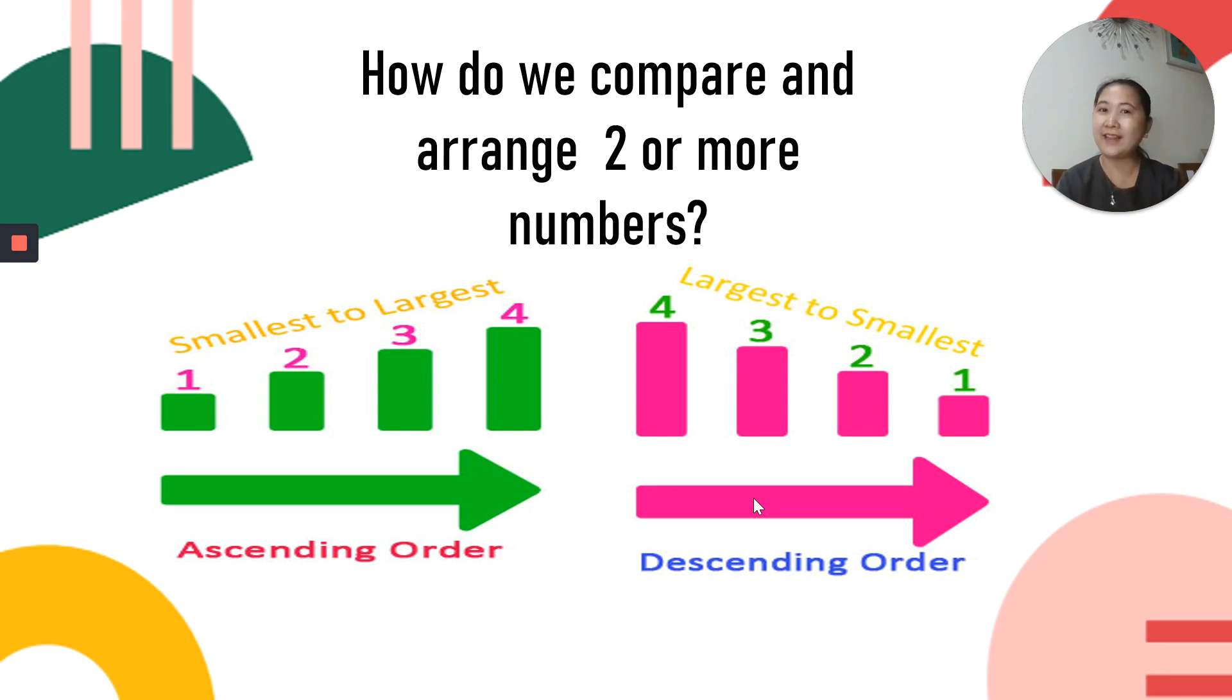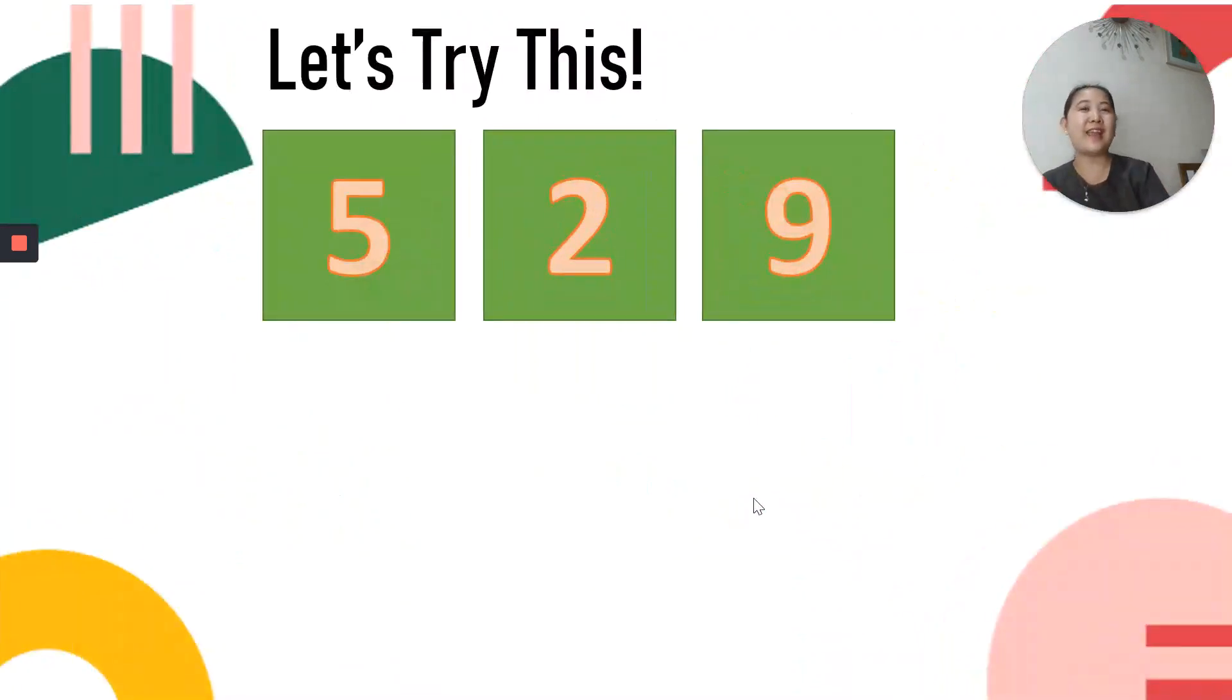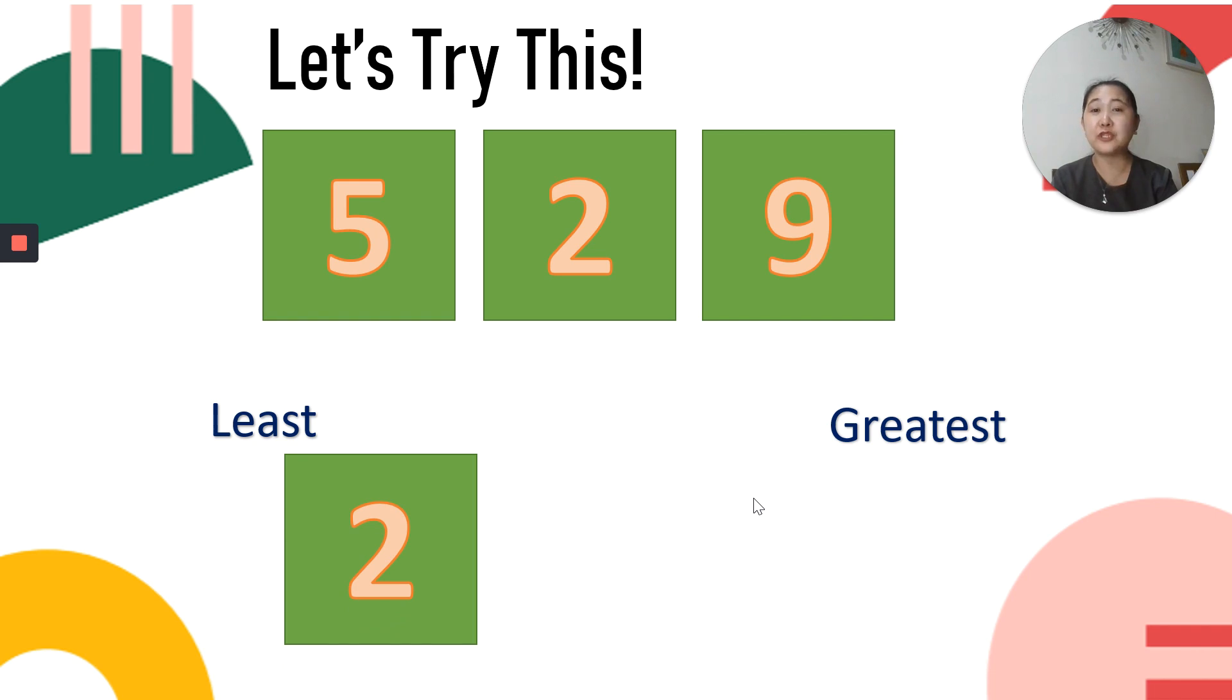Let's practice. Let's try this. Given numbers to arrange them from least to greatest. What comes first? What's the least number? It's 2. After 2, greater number after 2 is 5. And the greatest number is 9. Good job.